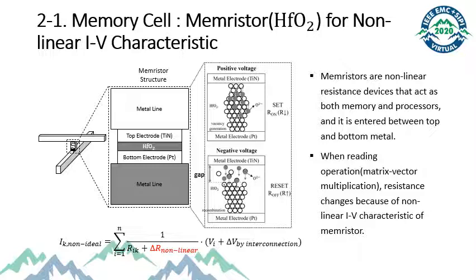The next part is the model of a memristor. Memristors are non-linear resistant devices that act as both memory and processors. We use representative memristor hafnium dioxide. It is entered between top and bottom metal. As shown in this figure, when a positive voltage is applied to TiN, vacancy that is a current path is formed and negative resistance of hafnium dioxide is generated, thereby reducing the resistance. This is the set process. On the contrary, when a negative voltage is applied, the oxygen path is recombined, so that the current path disappears and resistance increases. This is the reset process.